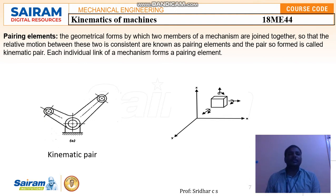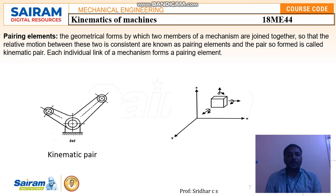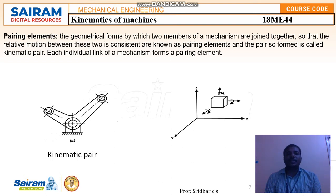Pairing elements: an element is a type of link or body which transmits motion from one link to another. Pairing elements are the geometrical forms of which two members of a mechanism are joined together, so that there will be a consistent relative motion between these two members.